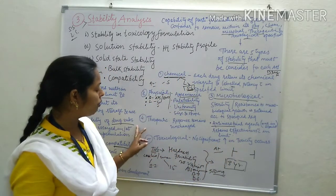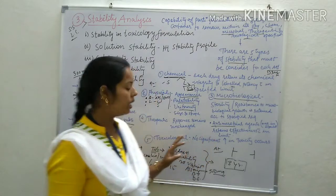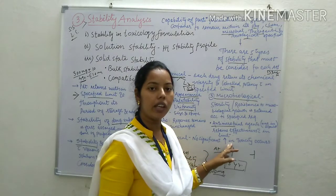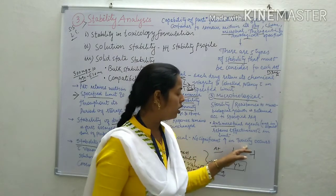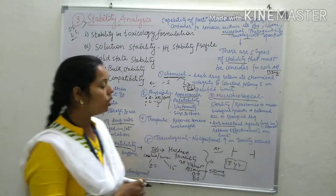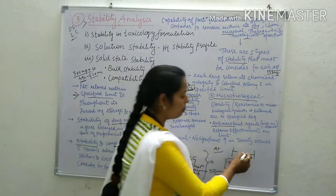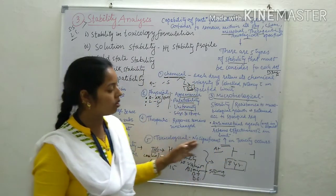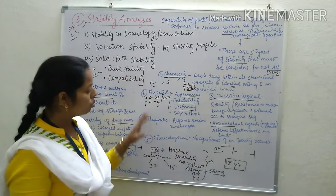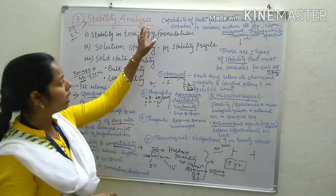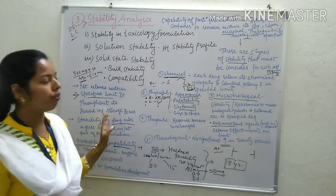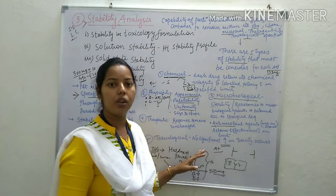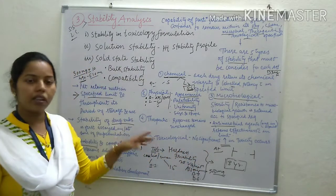After microbiological stability, the fifth one is toxicological stability analysis. In toxicological stability, there must be no significant increase in toxicity. Within the formula or preparation, there should not be any increase in toxicity of your formulation. These are the five stability parameters — chemical, physical, microbiological, and toxicological — which we generally study in pre-formulation.